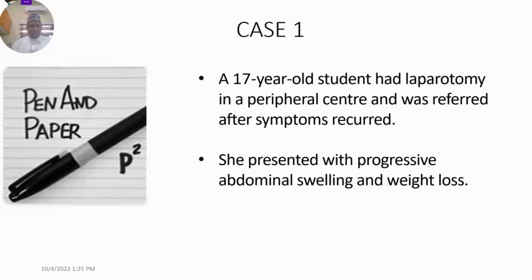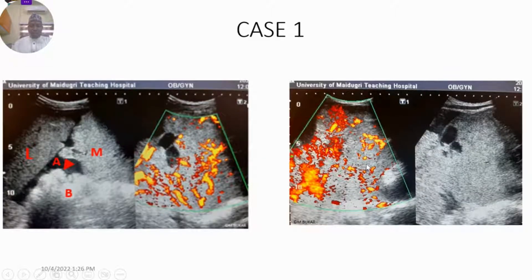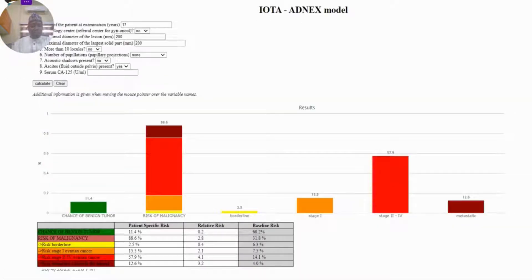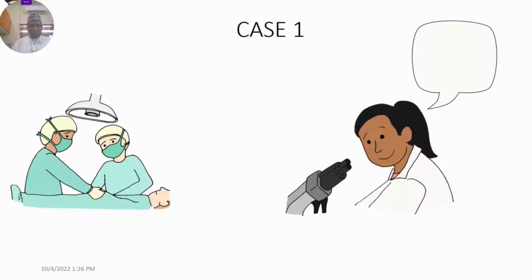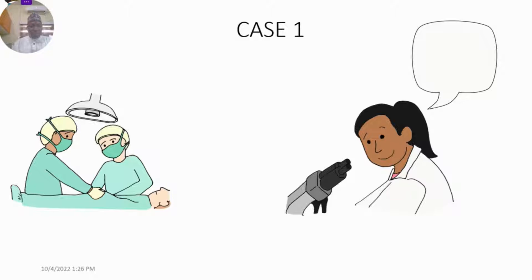Case 1 was a 17-year-old student who had a laparotomy at a peripheral center and was referred after symptoms recurred. She presented with progressive abdominal swelling and weight loss. We inputted the ultrasound information into the ADNEX model, which showed the highest risk was for stage 2 to 4. Clinically, it was stage 4 disease. She had surgery and histopathology confirmed it was a yolk sac tumor.